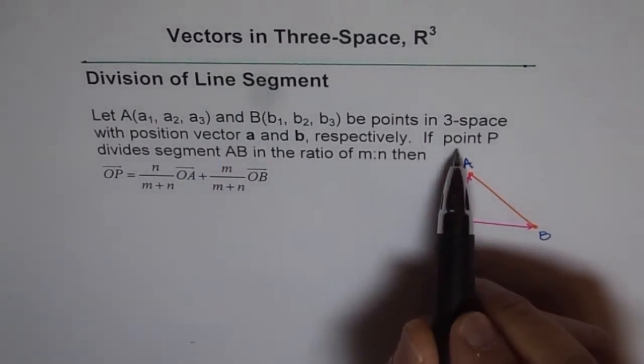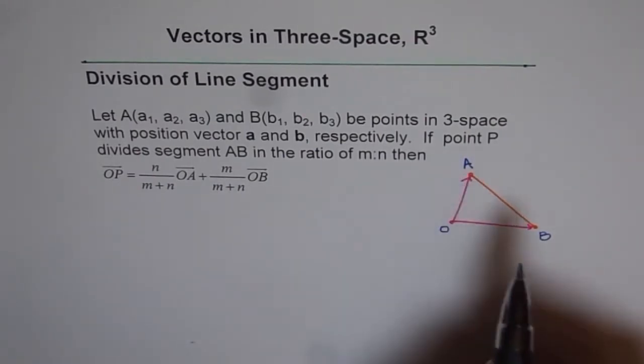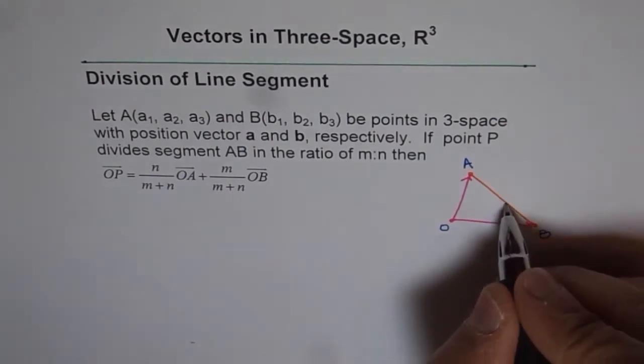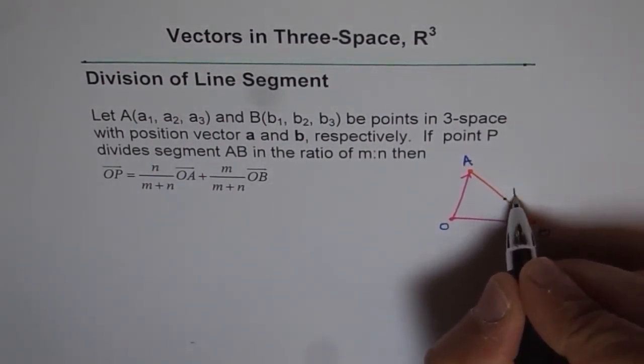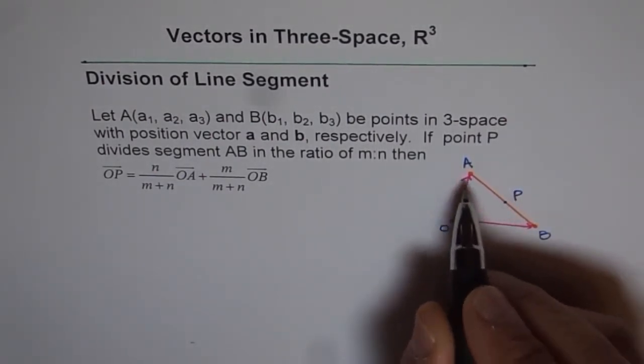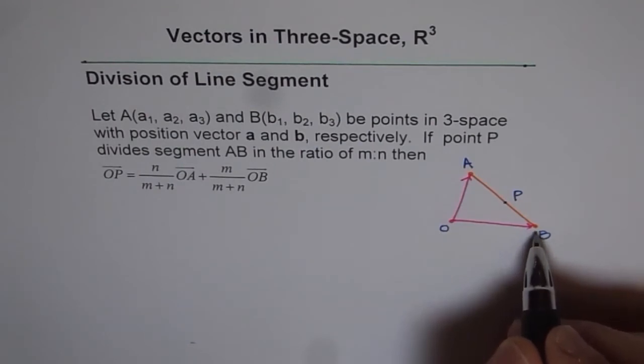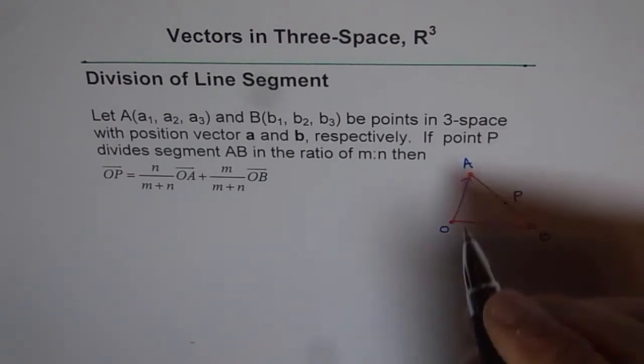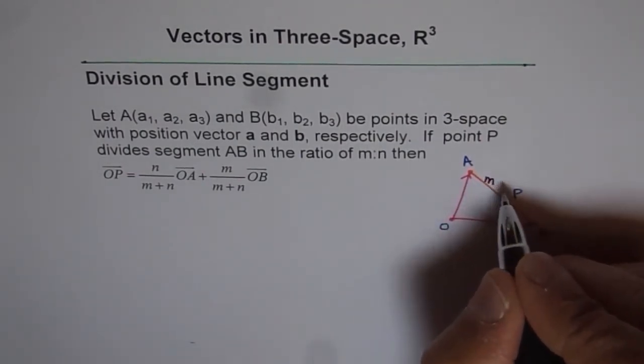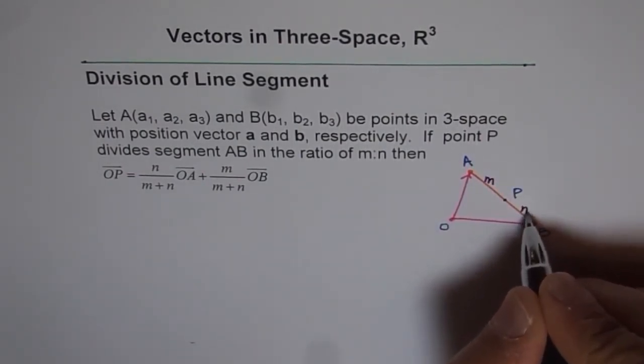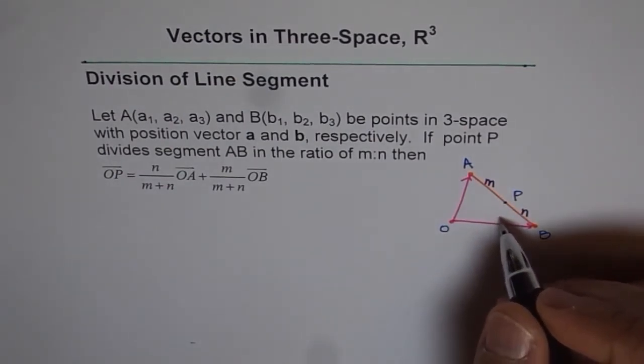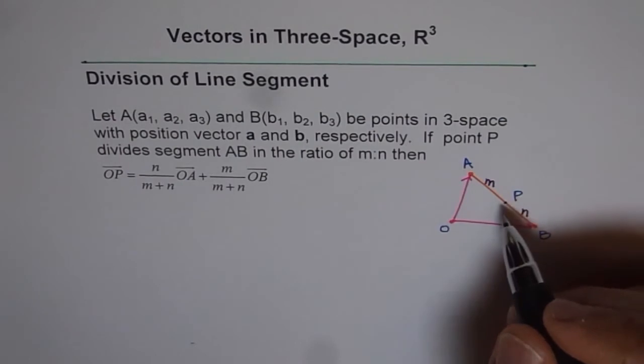It says if point P divides line segment AB in the ratio of M is to N. So let's have a point P here. Let's say this is my point P and it divides the line segment AB in the ratio of M is to N. So that means let us say this part is M, then this part will be N.